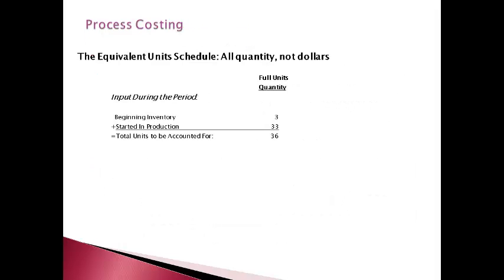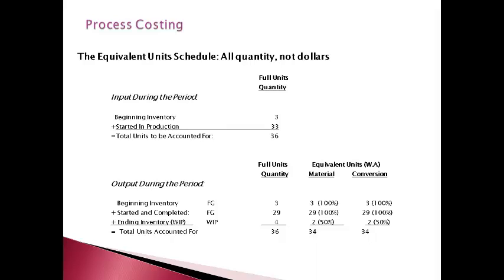Accountants use a common format to compute the amount of equivalent units for each type of product cost. This table computes equivalent units; quantities begin with full units. The top part accounts for all the units that were part of the manufacturing process during the period. The three beginning inventories are units that were not finished at the end of the last period. The 33 units started in production are added to the beginning units to get the total units of 36 to be accounted for during this period. The bottom part shows what happened to the 36 units in the current period. The total output units is equal to the total input units of 36.